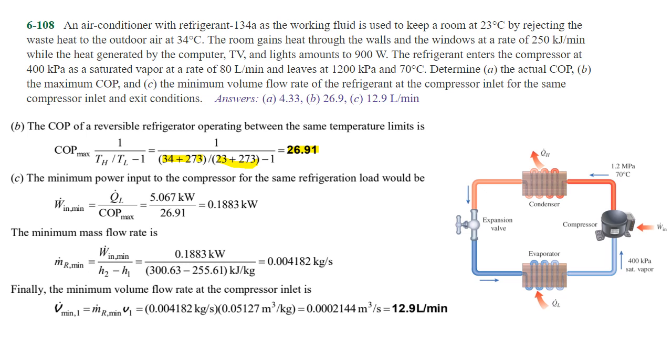Part c: the maximum power input to the compressor for the same refrigeration load. You just use that new maximum coefficient of performance and work the problem backward. It's Q_L dot over the coefficient of performance max, so you can calculate that as 0.1883 kilowatts.